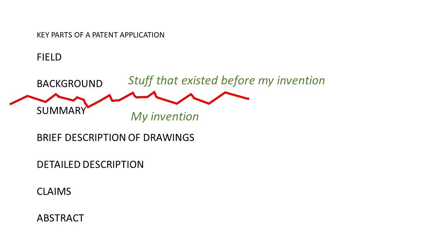The background section helps give context to your invention. Most inventions are improvements on an existing state of the art, so the background can help set the stage — but we should be careful about it. The first don't: do not discuss invention features in the background. The background means stuff that existed before my invention came along. If I put features of my invention in the background section, the patent examiner could potentially consider those features as prior art.